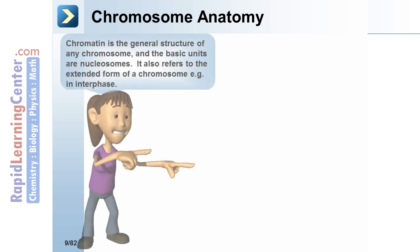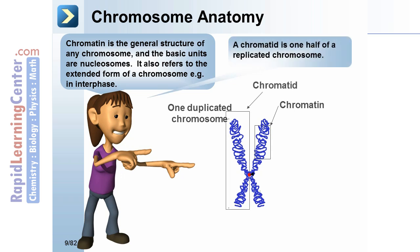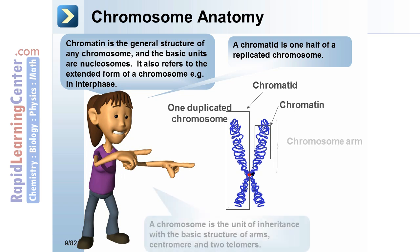Chromosome anatomy. Chromatin is the general structure of any chromosome; the basic units are nucleosomes. It also refers to the extended form of a chromosome, e.g., in interphase. A chromatid is one half of a replicated chromosome. The chromosome is the unit of inheritance with the basic structure of arms, centromere, and telomeres.